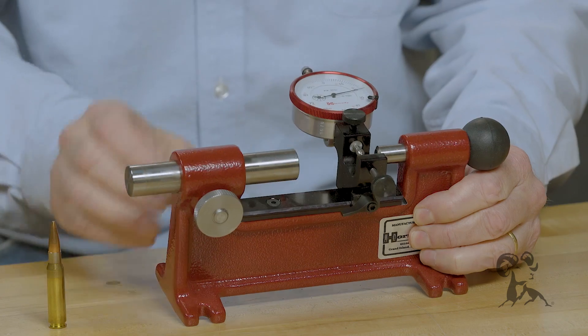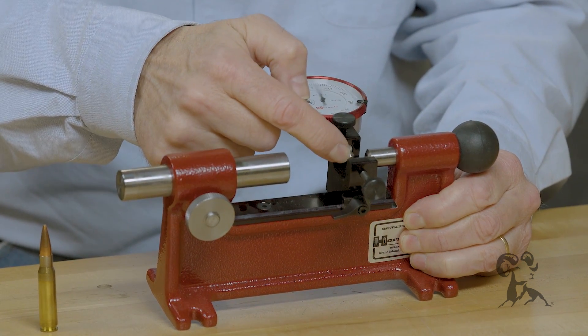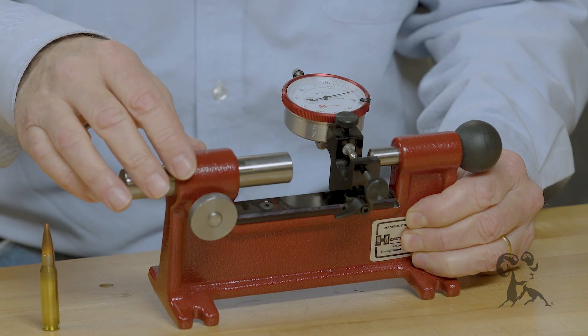Let me show you how it works. Here we have a dial indicator that has a bearing surface that bears against the bullet, or in some cases against the neck. We'll get into that later.